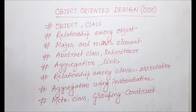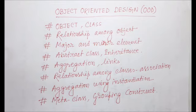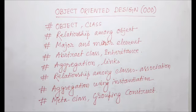The goal of object-oriented design is to design the classes identified during the analysis phase and the user interface. During this design phase, we identify and define additional objects and classes that support the implementation of requirements. For example, during the design phase you might need to add an object for the user interface, such as a data entry window or browser. In a class diagram, we represent the object using a rectangular box.